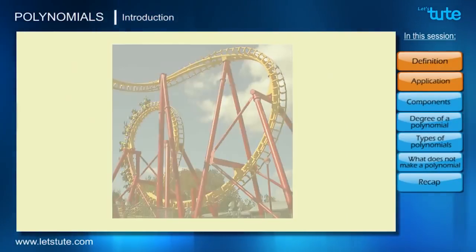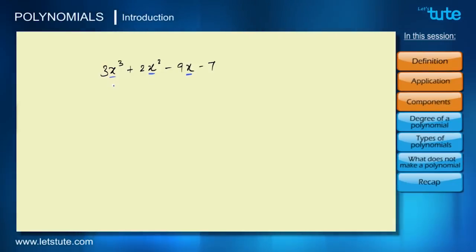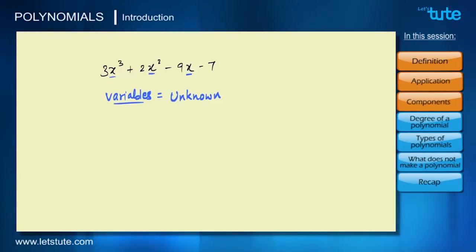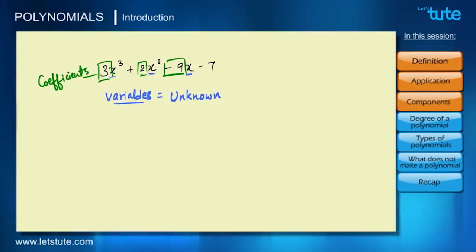First, let us look at the real components of a polynomial using the same example. The letters we see — like x — are called variables. We call them variables because we don't know their exact value. Instead of x, there could be y, z, or anything you want to label it as.